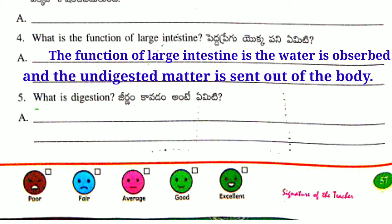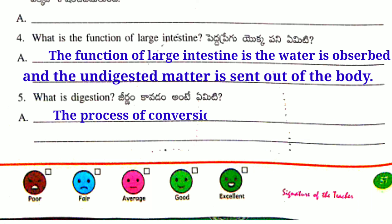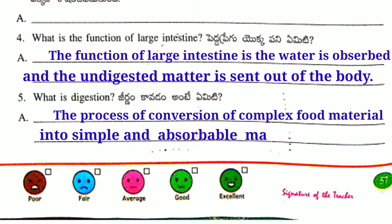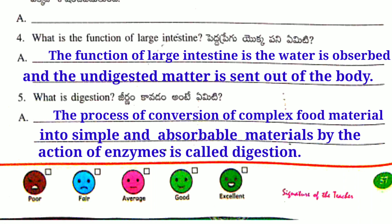Fifth question: What is digestion? The process of conversion of complex food material into simple and absorbable materials by the action of enzymes is called digestion.